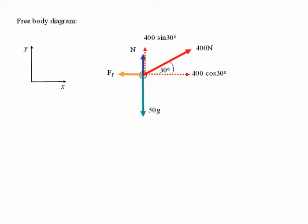So we resolve the 400 newton force into two components, one in the vertical direction and one in the horizontal direction, as shown.